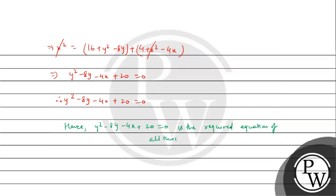Hence, y² - 8y - 4x + 20 = 0 is the required equation of all those points which are equidistant from (2,4) and y-axis. So y² - 8y - 4x + 20 = 0 will be your final answer. I hope you understood it well. Best of luck.